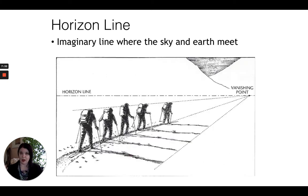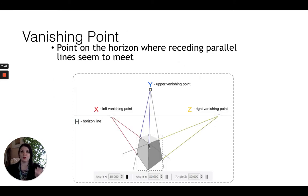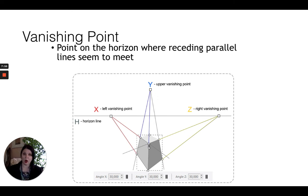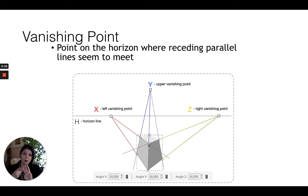The horizon line is an imaginary line where the sky and the earth meet, and in one point and two point perspective it is where our vanishing points are located. A vanishing point is a point on the horizon where receding parallel lines seem to meet. When you have three point perspective it gets more complicated because you have multiple vanishing points instead of just one. The vanishing point is essentially the point where the lines converge.